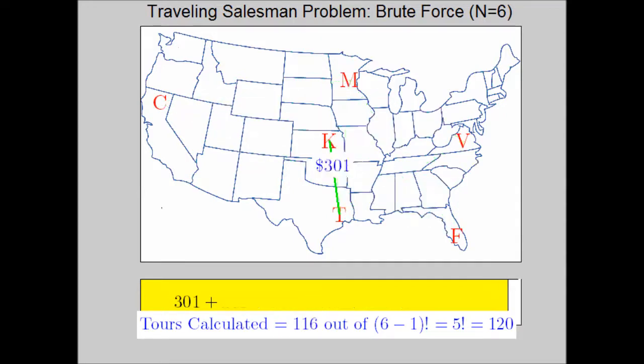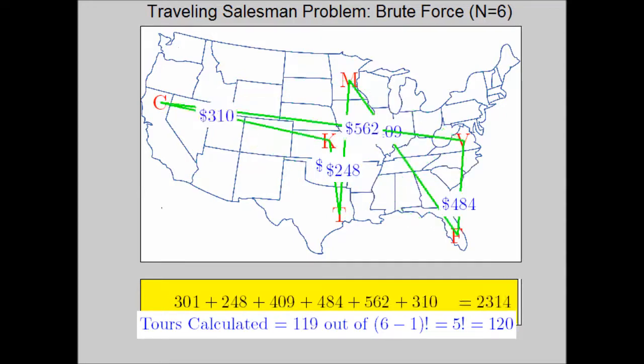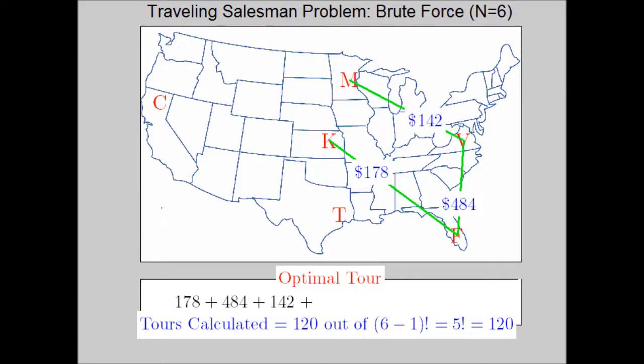But in this case, as we work through here, the optimal tour is discovered: Kansas to Florida, Virginia, Minnesota, Texas, California, back to Kansas, and there we have it.